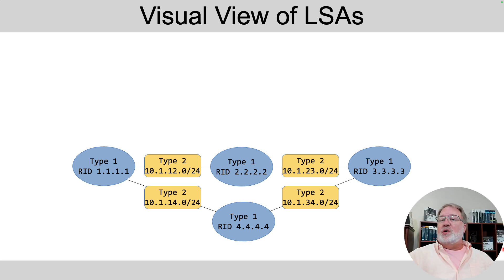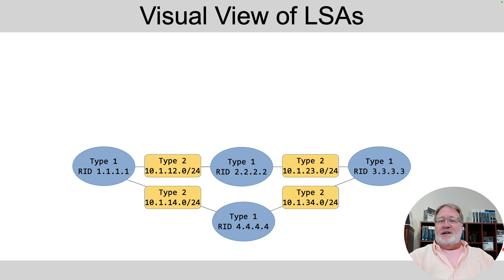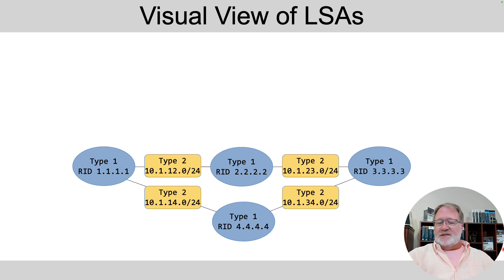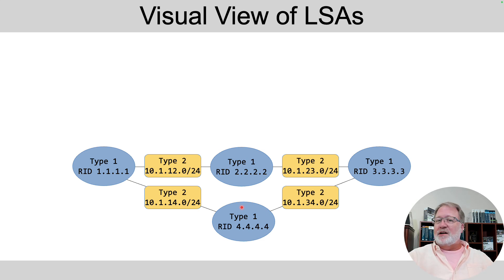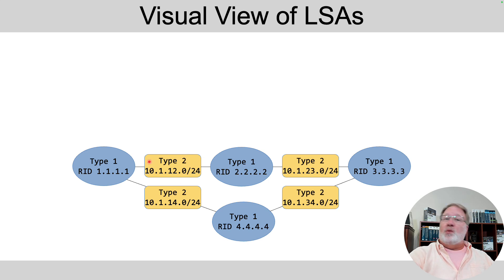Something else you can do to verify OSPF is look at the link state database, though for CCNA especially, the neighbor detail is more important. Inside a single area design, you'll have a type 1 or router LSA — one for each router — and for each link where a designated router is elected, there'll be a type 2 or network LSA created. So in this design, we'll have four of each.